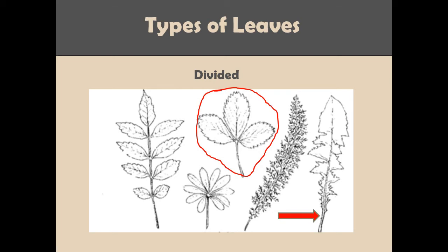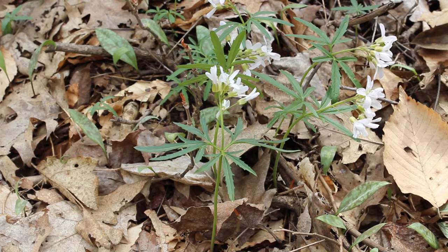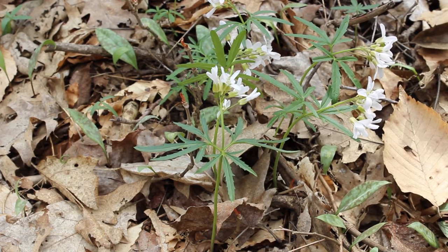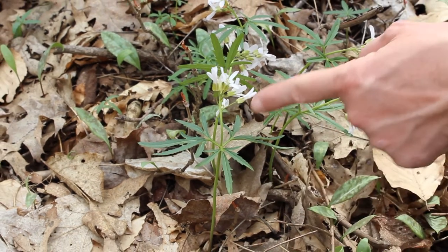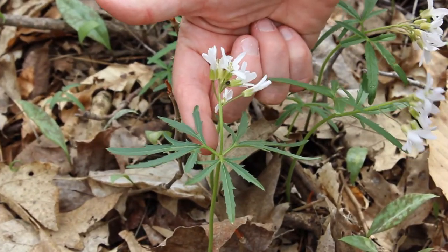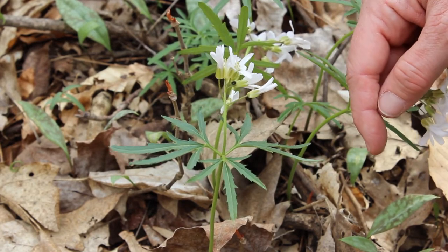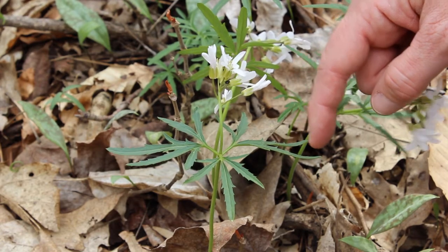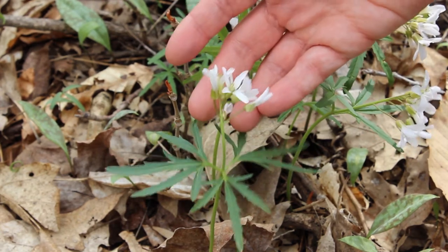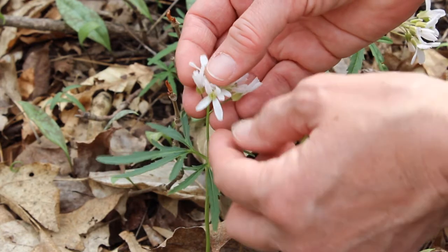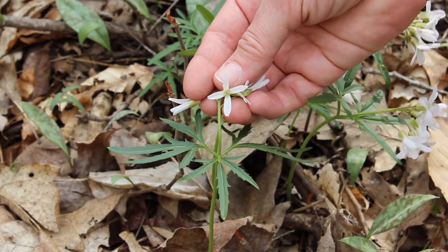Now let's take a look at some real examples. This wildflower is called cut-leaved toothwort, and its name accurately describes its leaves. If you look at the placement of leaves, they are whorled around the stem — there's one, there's the second, and the third. Each leaf is cut, or divided, into leaflets. If you look at the leaflets, you'll see that they're also toothed. So those characteristics identify the leaves of this plant. Looking at the flower, this is a great example of a regular flower. You'll notice that there are four petals, all the same size, color, and shape.